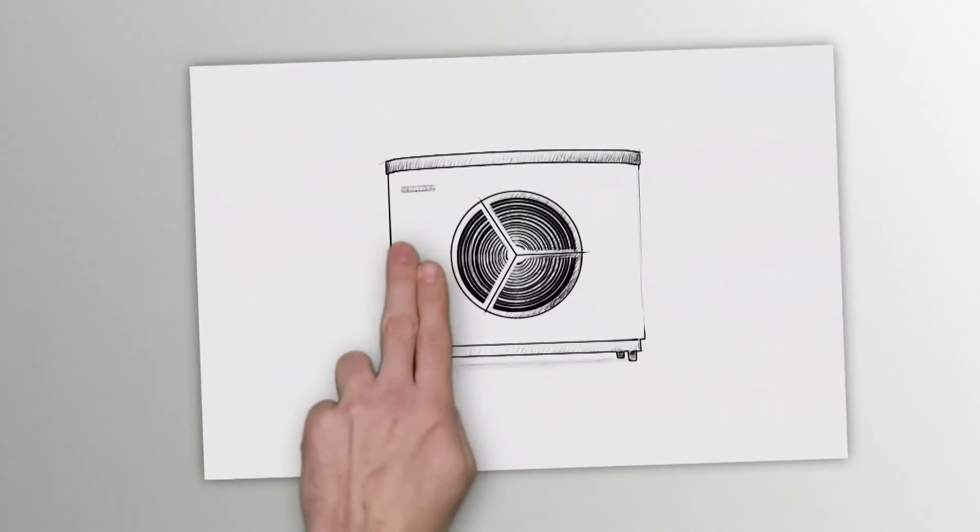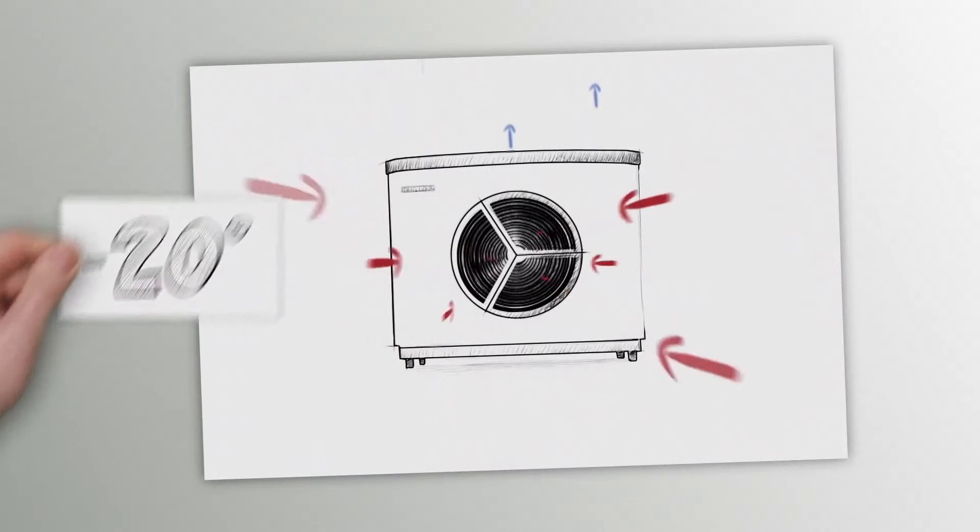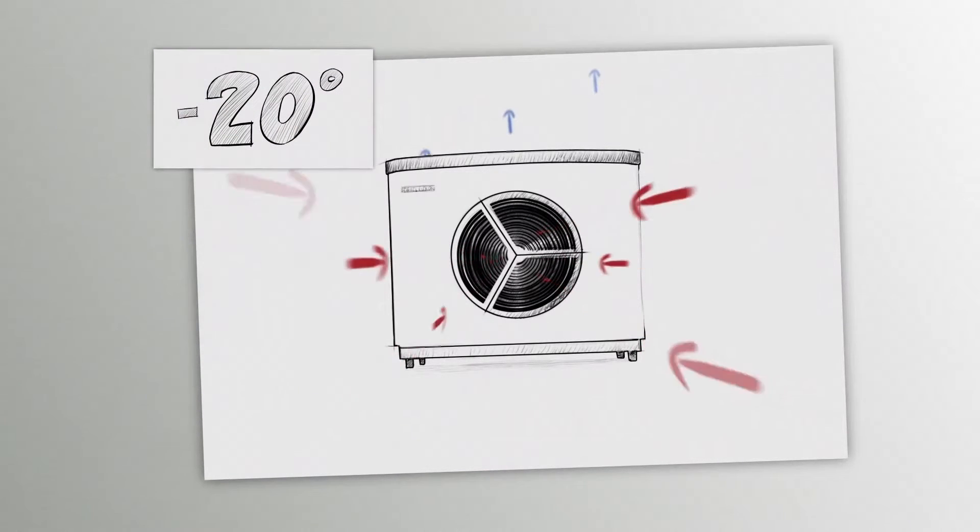An air source pump works by drawing in outside air and transferring the heat to the heating circuit of the house. Efficient systems can still harvest heat even when it is minus 20 degrees outside.